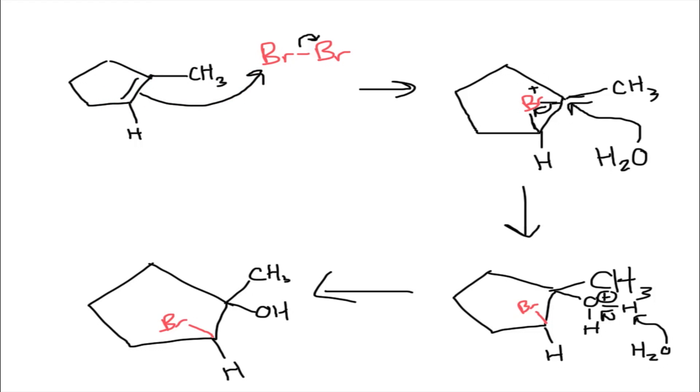The other electrons are going to move back onto the bromine on the right. And so now you're going to have this little weird triangle thing with the bromine in it. So this bromine is going to be attached to both carbons there.